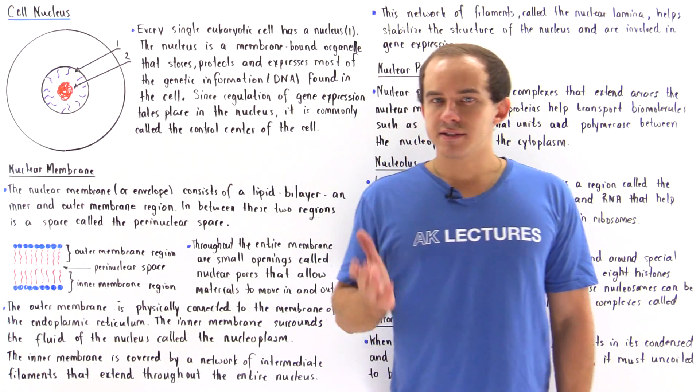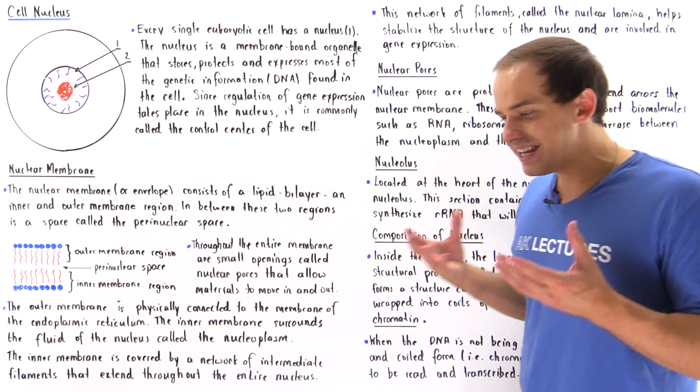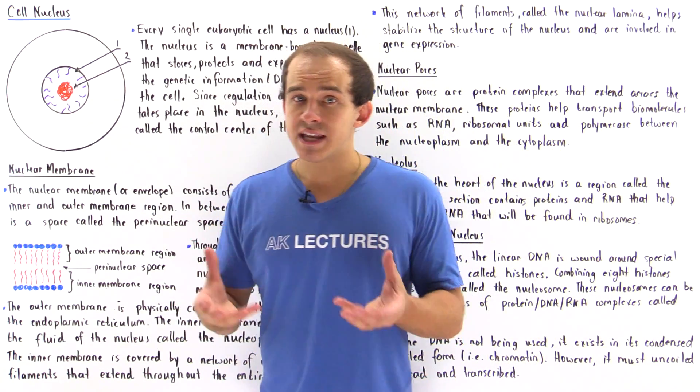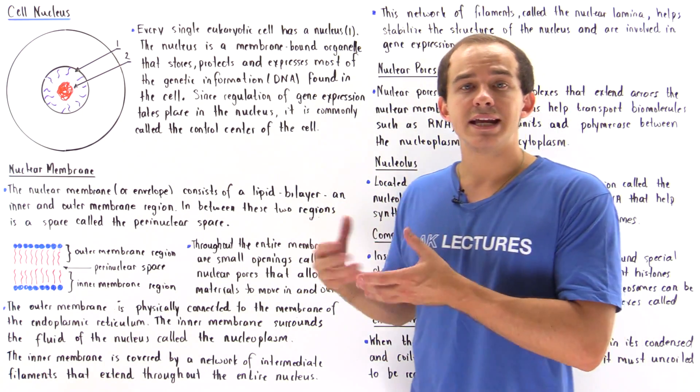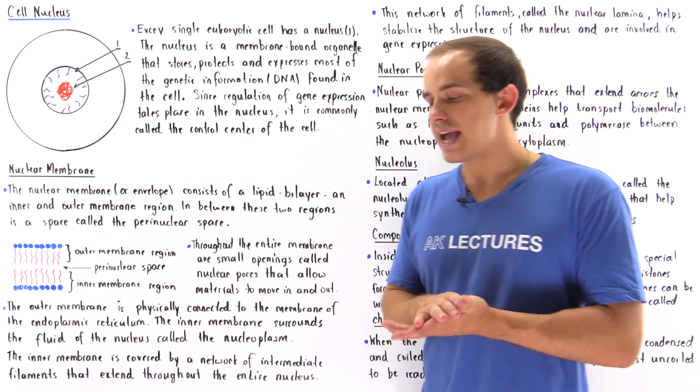Every single eukaryotic cell contains the nucleus. The nucleus is a membrane-enclosed organelle that contains, stores, protects, and expresses most of the genetic information found in our cell - the DNA, the deoxyribonucleic acid.